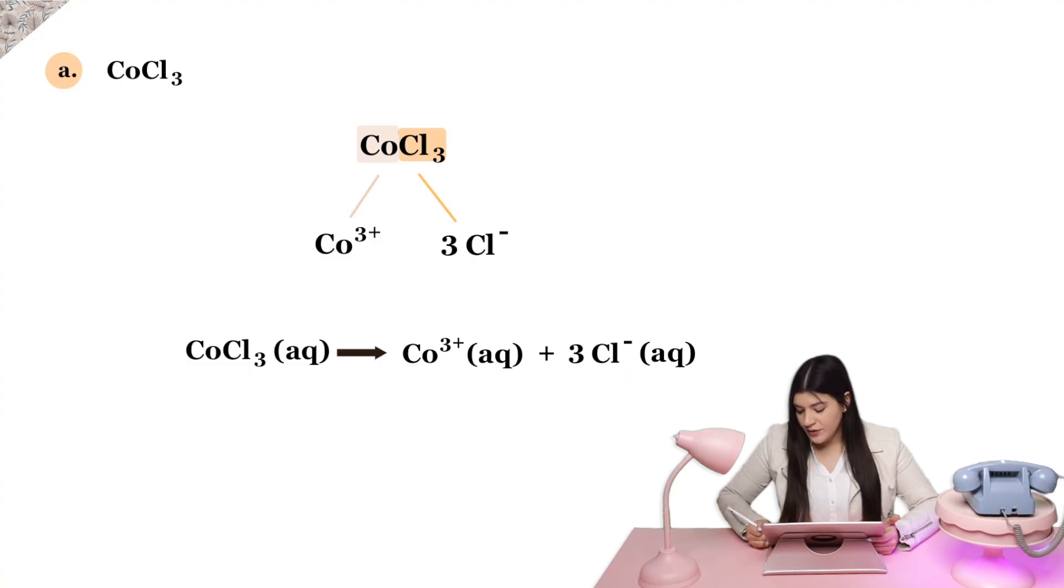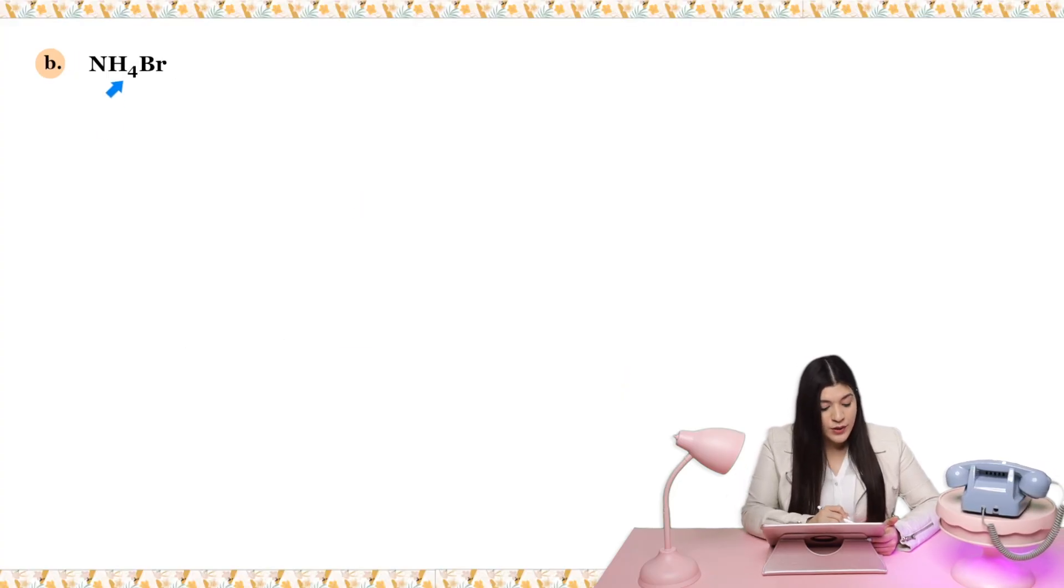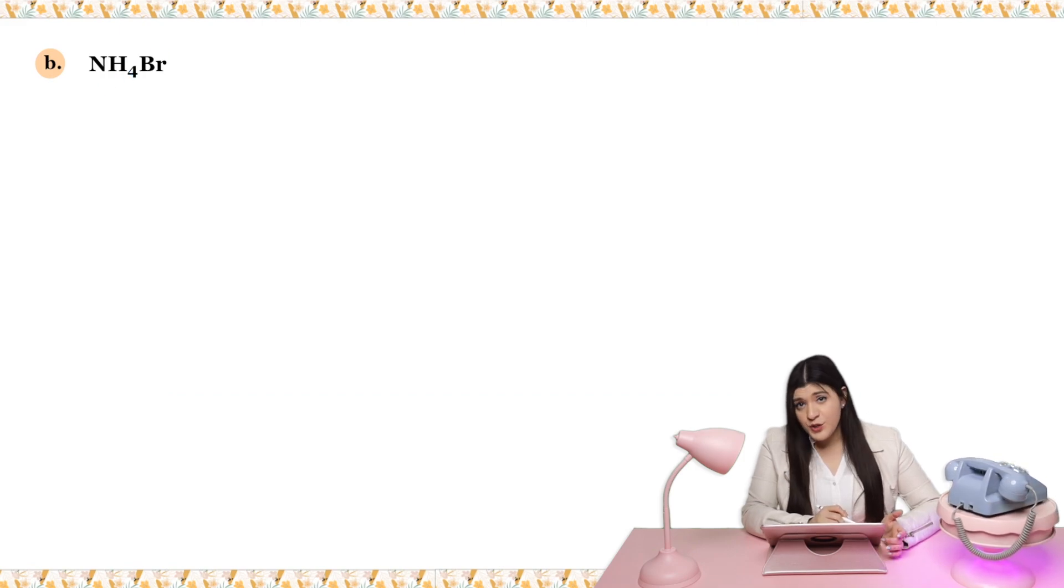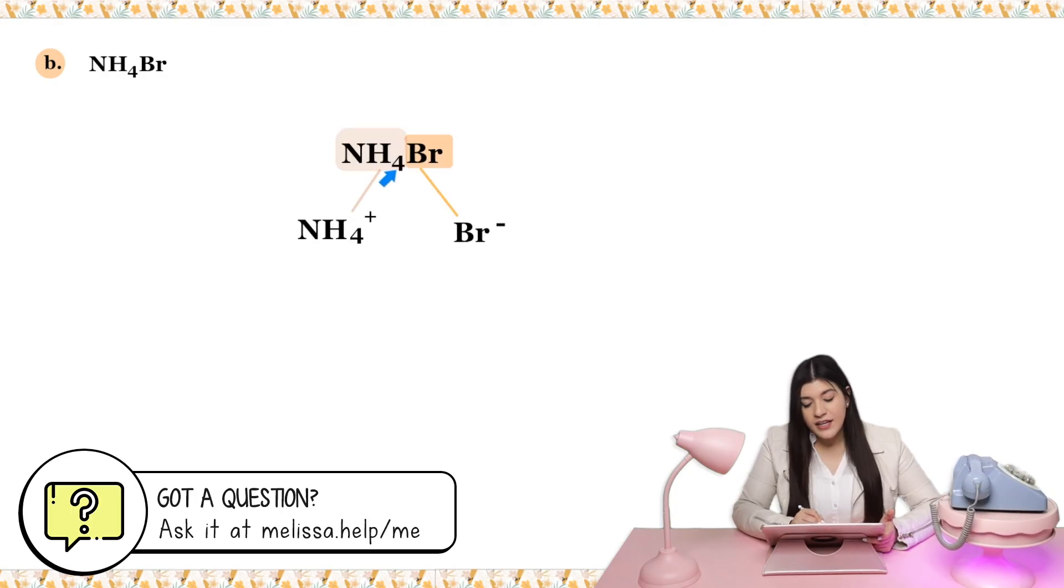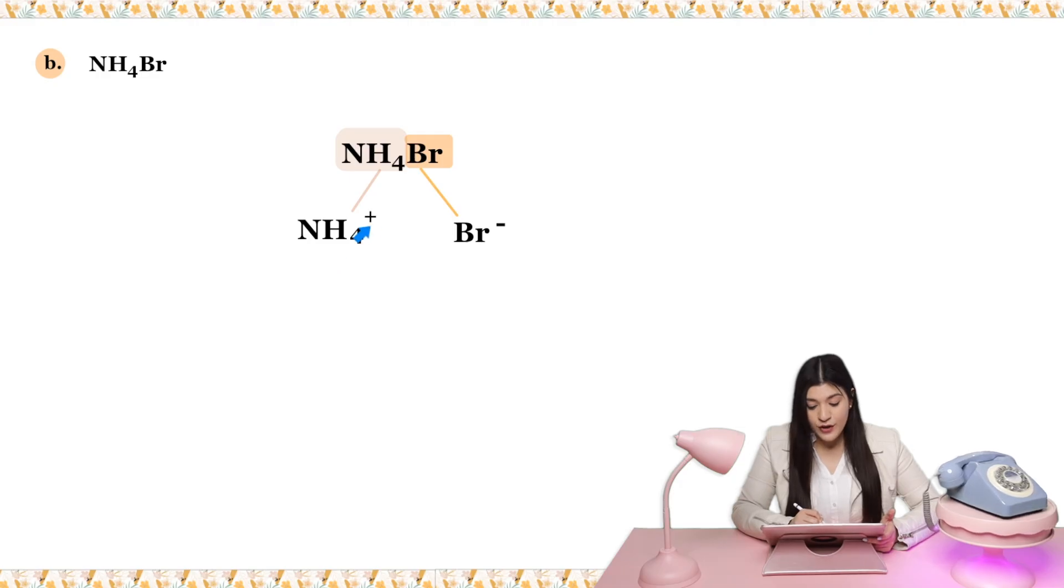Let's keep going. Let's do part B. Same thing, I'm going to break this apart and identify what's my positive charge, which is my negative charge, and how these are going to break apart. I would look at NH4, and remember that is a type of polyatomic ion, which is ammonium. Ammonium has a +1 charge, and bromine has a negative 1 charge.